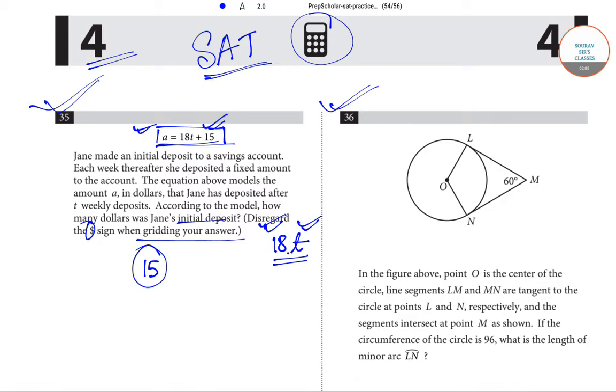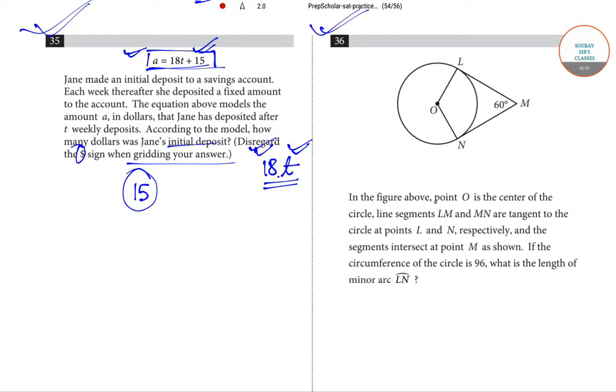Coming to the next question, question number 36. This is a problem of geometry. In the given figure, point O is the center of the circle. The line segments LM and MN are tangent to the circle at points L and N. Here at point L, LM is tangent to the circle, and here at point N, NM is tangent to the circle. The segments intersect at point M as shown.